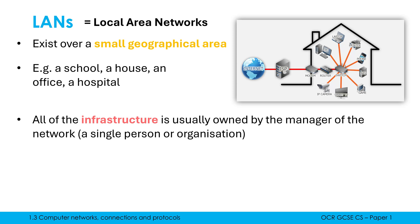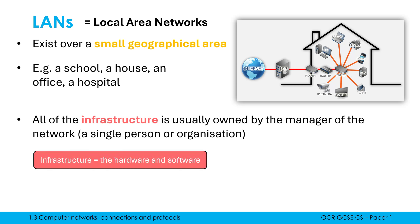In a LAN, all of the infrastructure is usually owned by the manager of the network, which could be a family, a single person, or a whole organisation. Whoever is controlling that network owns all of the stuff inside it, because infrastructure is a fancy word for all of the hardware and software. This diagram is showing the possible devices we might have in a LAN — these would be owned by the family who live at this house, for example.